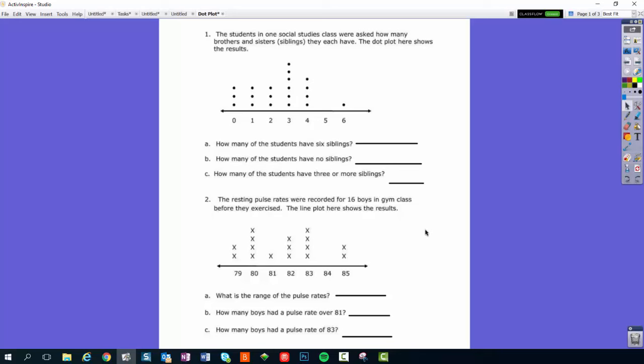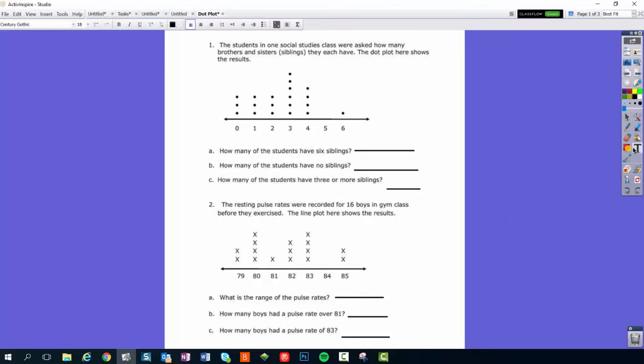Now I'm going to add the answers to the right of each of my blanks. So I can just get my text tool here, and it says how many of the students have six siblings. Just one has six siblings. So I'm just going to click, and I'm going to add my answer. To change the color of my font, I'm going to come up to the top. I want it to write in red, and I want it to be a little bit bigger so I can hit the text larger button, and it'll grow my text there. So I just type in the number one, and I can reposition that text.